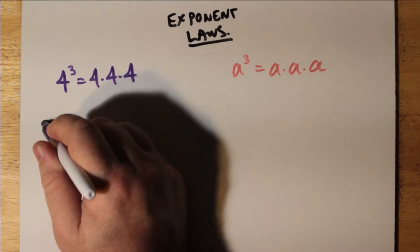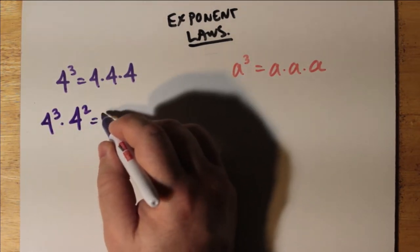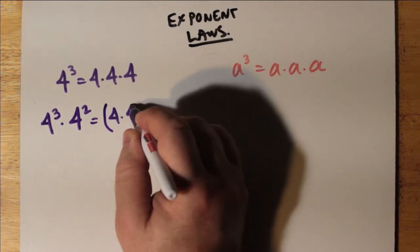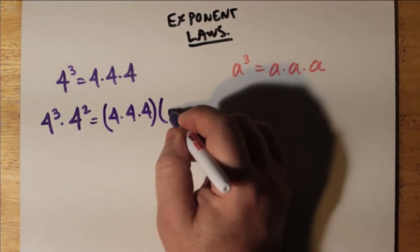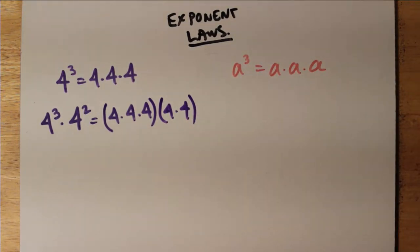4 cubed times 4 squared, here we're giving an example where the bases are both 4, and so all we do is add the exponents. Now to see this, it's like saying 4 times 4 times 4 is multiplied by 4 times 4. That's 4 cubed times 4 squared.